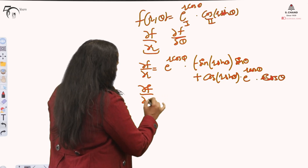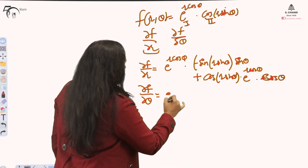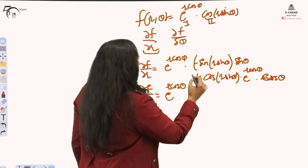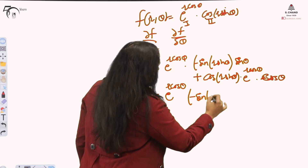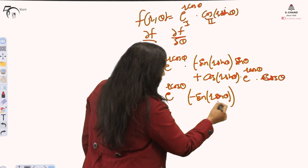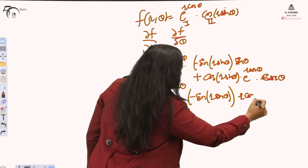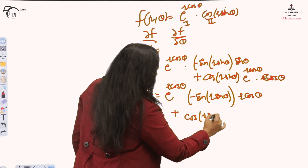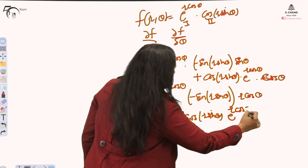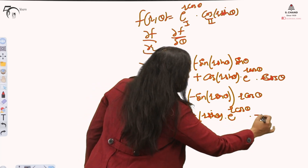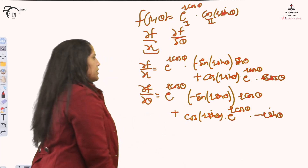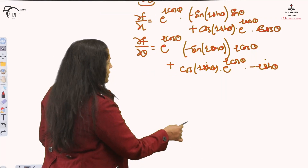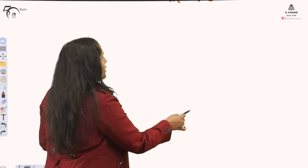For del f / del θ, treat θ as the variable and r as constant. Applying the product rule: the derivative of cos(r sinθ) with respect to θ gives −sin(r cosθ) · r cosθ (since the derivative of sinθ is cosθ and r is constant); the derivative of e^(r cosθ) with respect to θ gives e^(r cosθ) · (−r sinθ). So we get del f / del θ = −r cosθ · sin(r sinθ) + e^(r cosθ) · (−r sinθ) · cos(r sinθ). These are the two partial derivatives in r and θ. The same approach extends to higher-order derivatives.